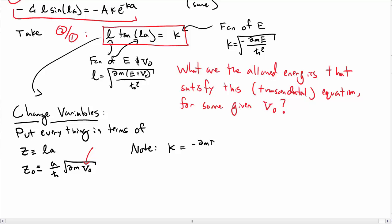Note that K, which was the square root of minus 2m E over h bar squared, can be written after some algebra as the square root of Z naught squared minus Z squared all over a squared. I encourage you to check that this is true.